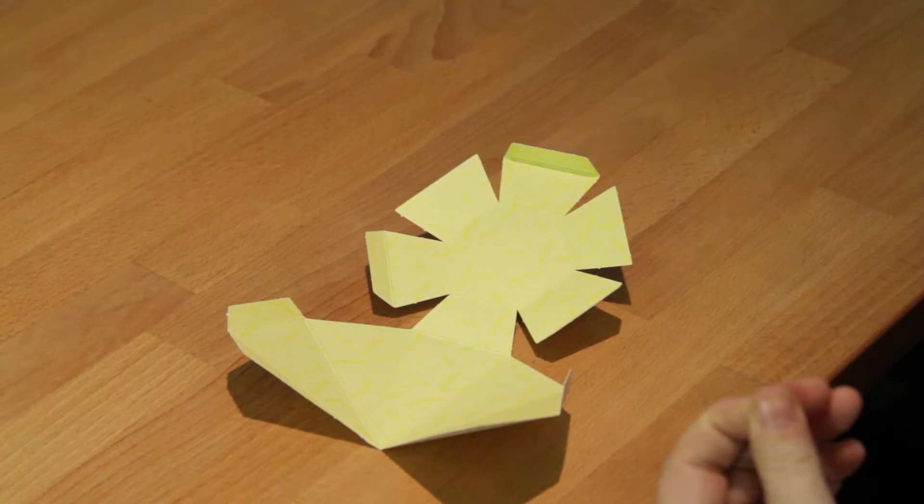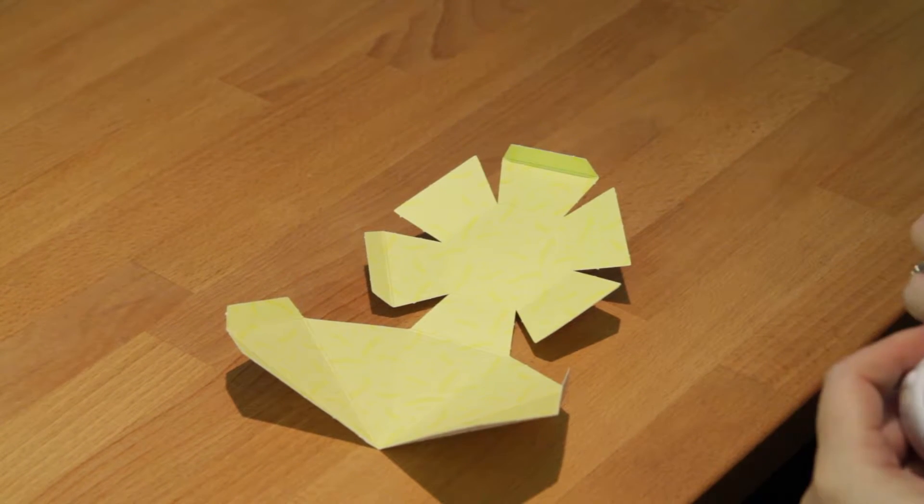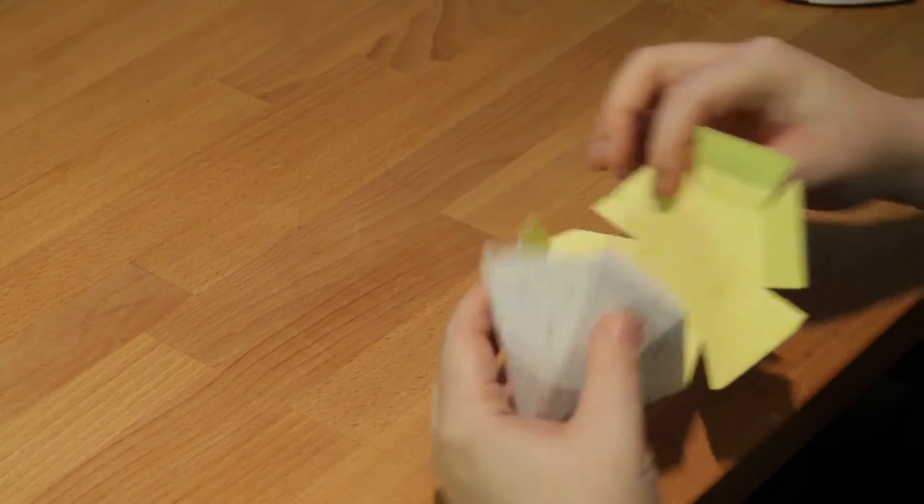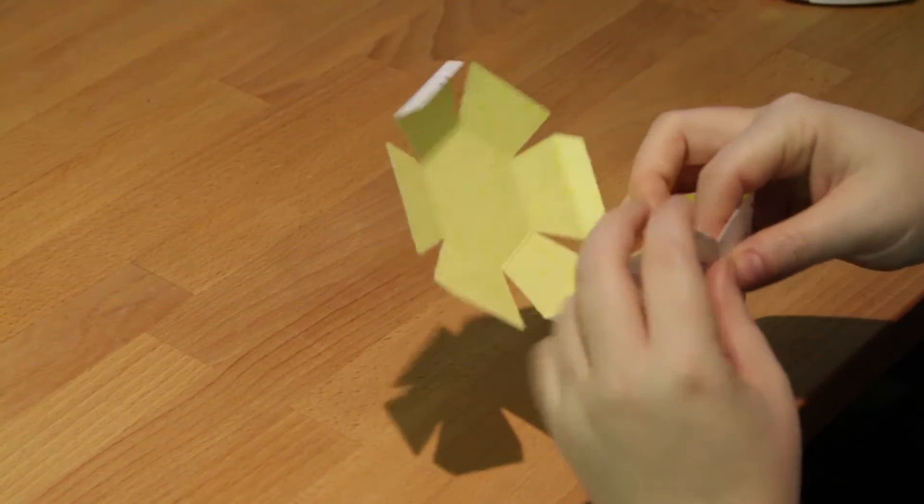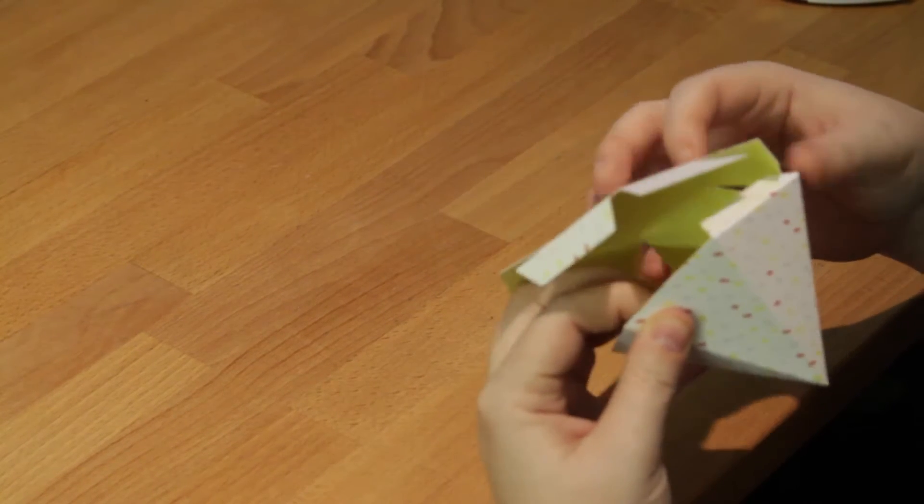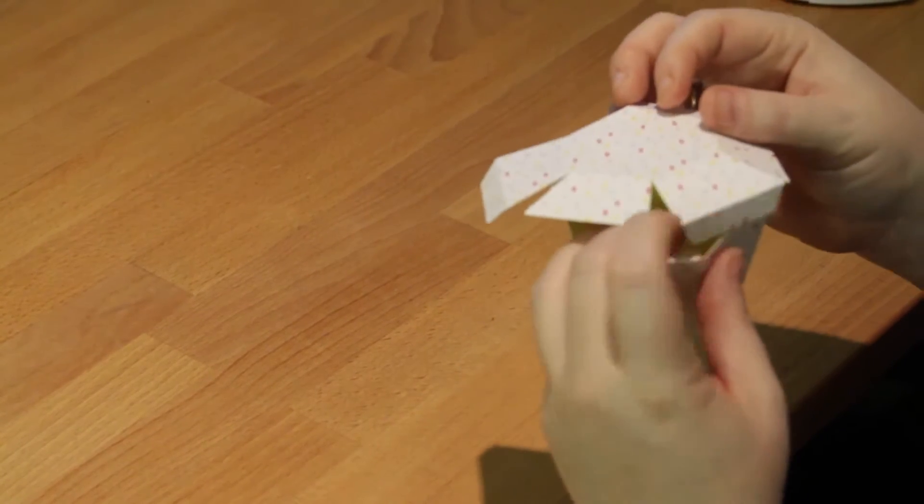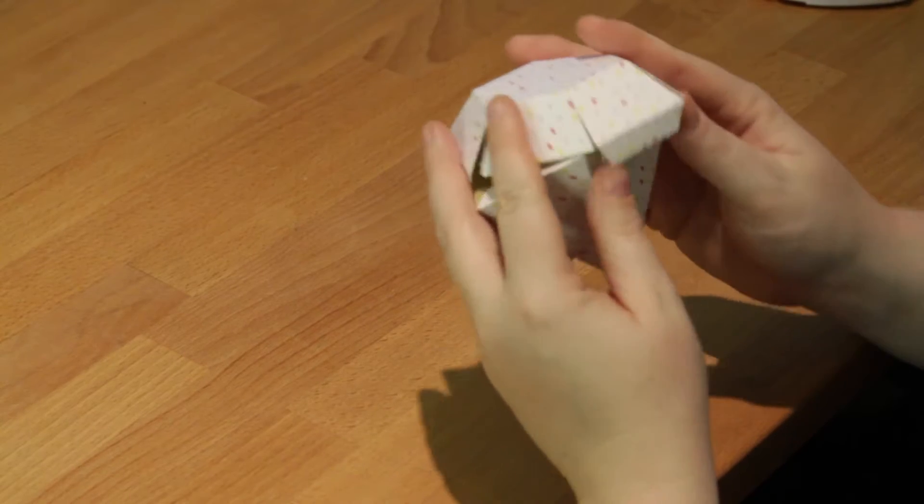Then what it says is to use double-sided tape on the tabs and fold together to make your paper gem. Just because I'm not sure how this all comes together, I'm going to practice it first. I'm just going to fold all these in and see if I can work out how this actually goes together. Okay, I think I've got it. I think it actually comes out looking like an actual gem.